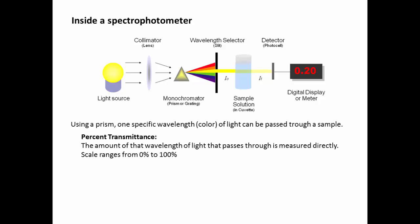One is referred to as the percent transmittance value. The amount of that wavelength of light that passes through is measured directly. The scale ranges from 0% to 100%.